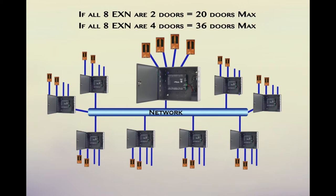This is compared to the maximum of 36 doors, which can be reached when all the expansion nodes deployed are four-door models. Depending on the necessity, there is an option to enable additional doors to existing two-door expansion nodes. To do so, upgrade any of the two-door expansion nodes to a four-door model to increase system door capacity.